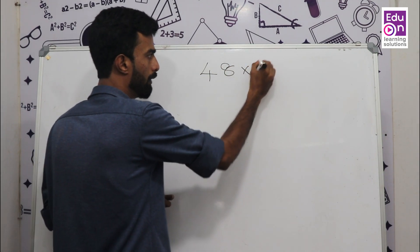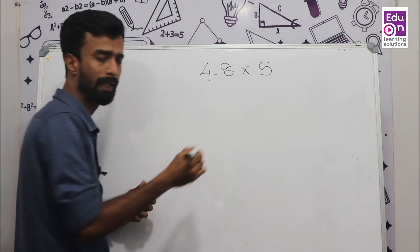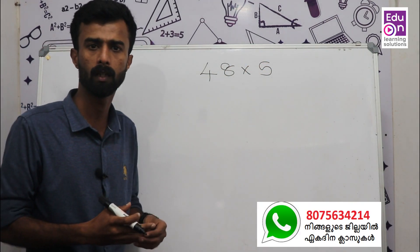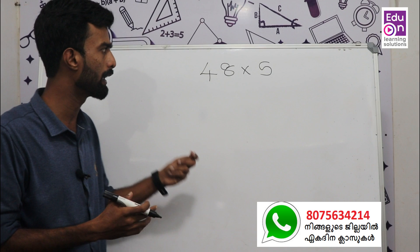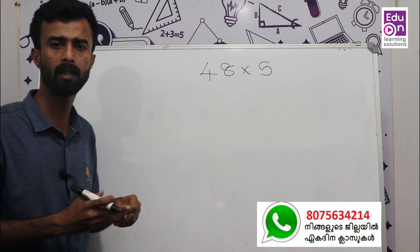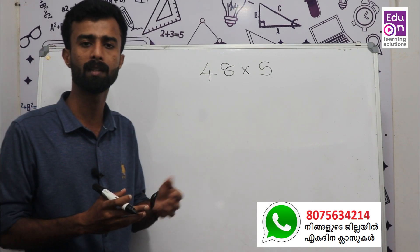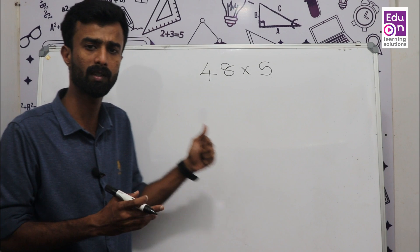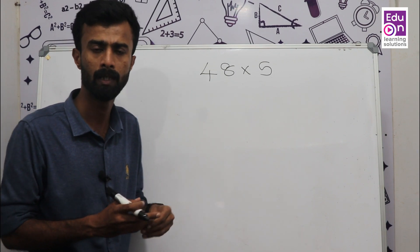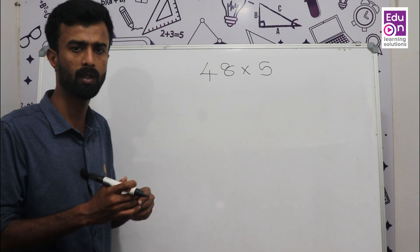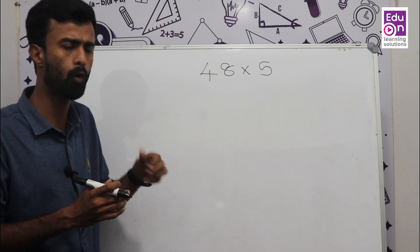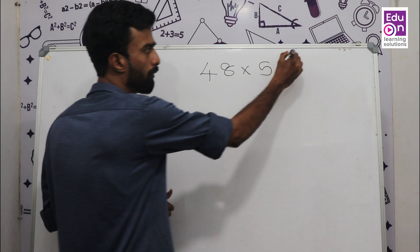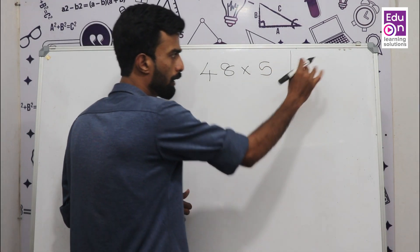Multiplication by 5 — how do we multiply? Let's take the number 48. We will look at 48 × 5 and learn the shortcut method.